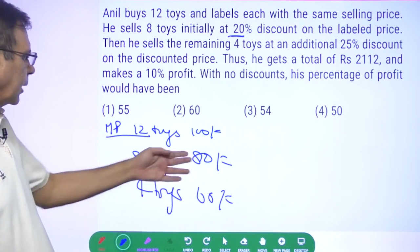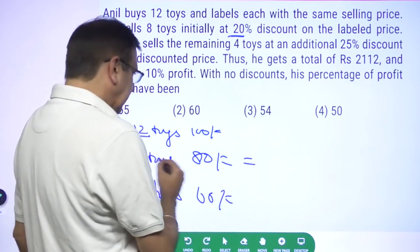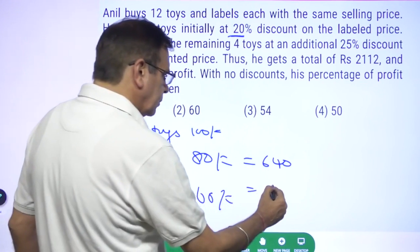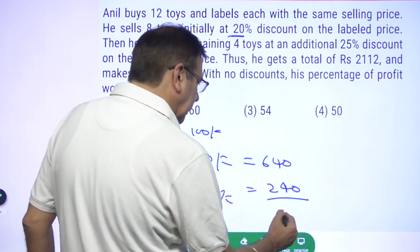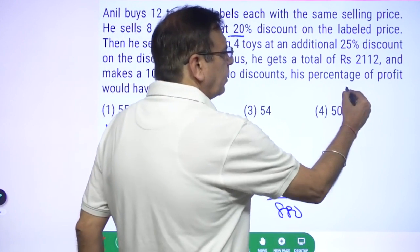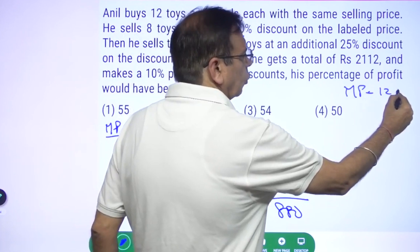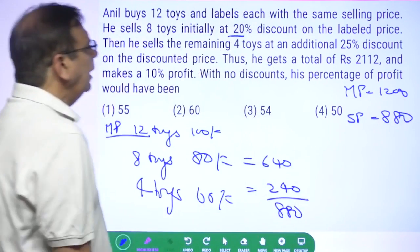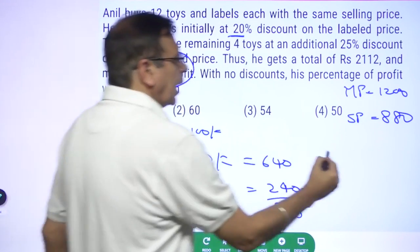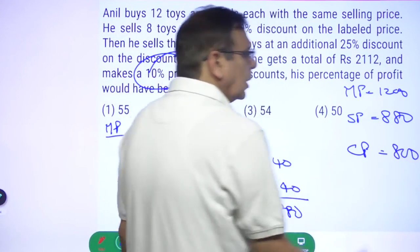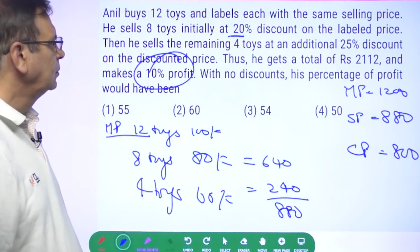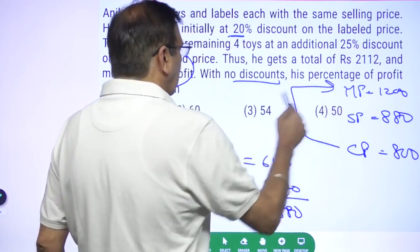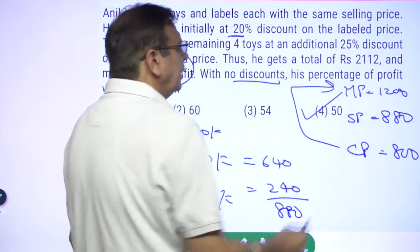So what is the selling sales he will have? 8 times 80, 640. And 4 times 60, 240. He will get a total of Rs880. So his mark price is Rs1200. His selling price is Rs880. And he has a profit of 10%. That means his cost price is Rs800, 880 divided by 1.1. So if he was not giving any discounts, he would be selling at mark price. He will have a profit of 50%.